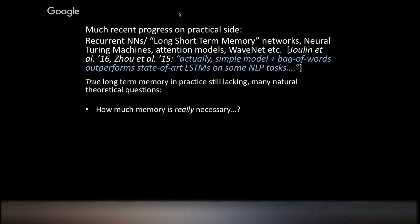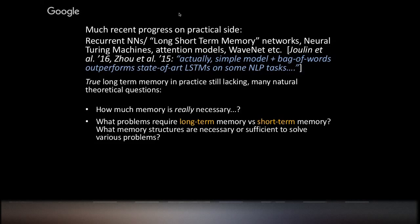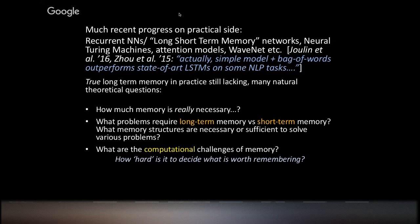Some things I like to think about: how much memory do you really need to do well? Basically, given some distribution, how much do you need to remember about the sequence in order to make good predictions about the future? What kind of memory do you need — problems which require longer-term memory versus shorter-term memory? And what memory structures are sufficient? Also, what are the computational aspects? Even if we know we have this much memory, how do we decide what to remember?